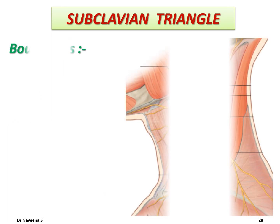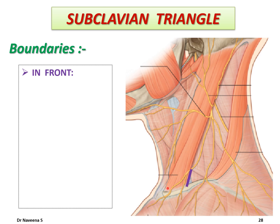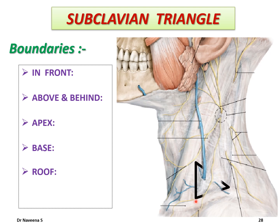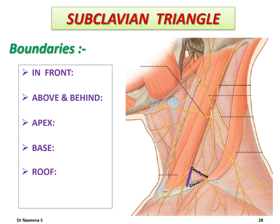The subclavian triangle's boundaries: in front, bounded by the posterior border of the clavicular head of the sternocleidomastoid muscle; above and behind by the inferior belly of the omohyoid; the apex lies where those two muscles meet; the base is formed by the middle one-third of the clavicle. Its roof is formed by skin, superficial fascia with platysma, and the investing layer of deep cervical fascia. The roof is related with the intermediate branch of the supraclavicular nerve and pierced by the external jugular vein 2.5 cm above the clavicle. Deep to the investing layer, the roof is supported by the omohyoid fascia. The floor is formed by prevertebral fascia and two muscles — scalene medius, and, in a deeper plane, the first digitation of serratus anterior supported by the outer border of the first rib. Scalene medius thus forms the floor of both the occipital and subclavian triangles.